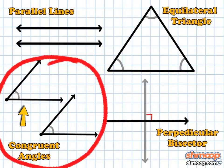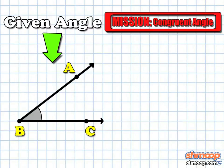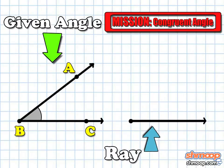Let's try a relatively simple construction. How do we construct an angle congruent to this given angle? We'll start by drawing a ray, which will be one of the sides of our new angle.